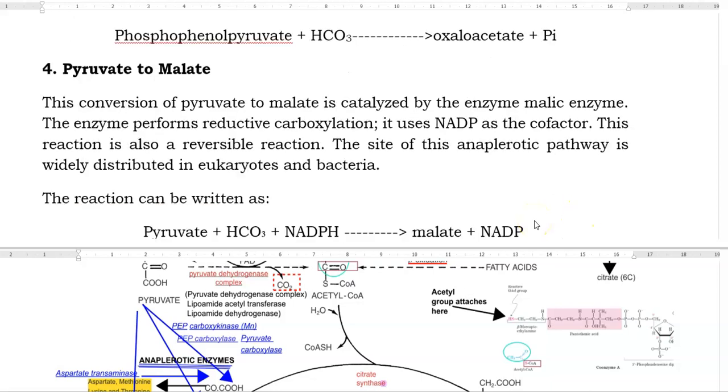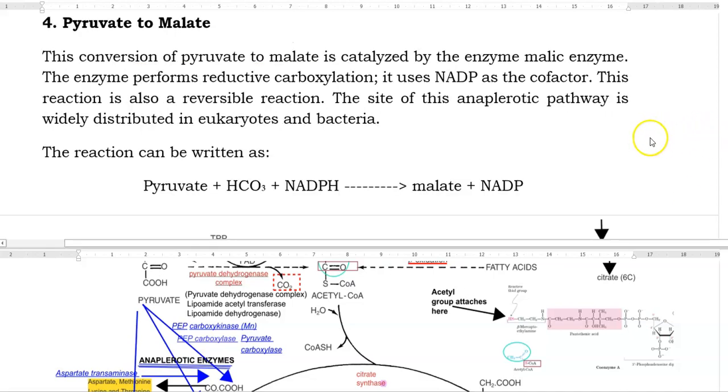The final anaplerotic reaction step is pyruvate to malate. This conversion of pyruvate to malate is catalyzed by the enzyme malic enzyme. The enzyme performs reductive carboxylation. It uses NADP as a co-factor. The reaction is also a reversible reaction. The site of this anaplerotic pathway is widely distributed in eukaryotes as well as bacteria. The reaction is shown below.